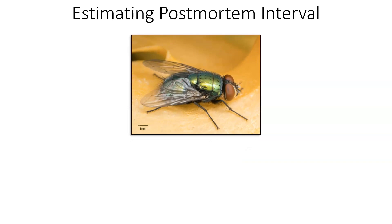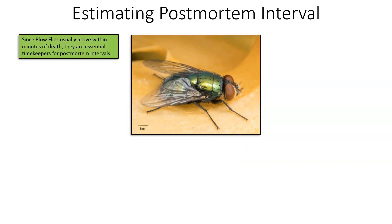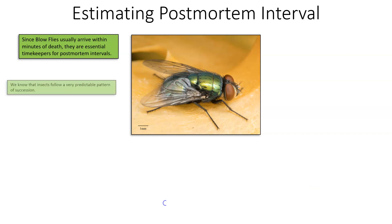Focus in on the bottle fly or the blow fly. Since blow flies usually arrive on a body or colonize a body within minutes of death, they are the essential timekeepers for the estimation of the post-mortem interval. They are the first inhabitants of a body because they can identify those death gases given off by a very recently deceased individual.